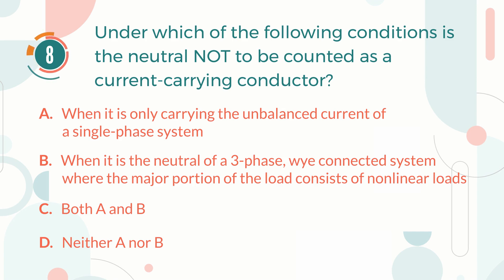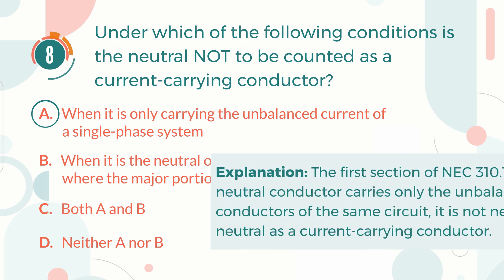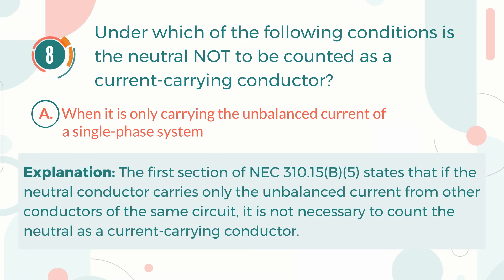The correct answer is A. When it is only carrying the unbalanced current of a single-phase system. Explanation: The first section of NEC 310.15(B)(5) states that if the neutral conductor carries only the unbalanced current from other conductors of the same circuit, it is not necessary to count the neutral as a current-carrying conductor.